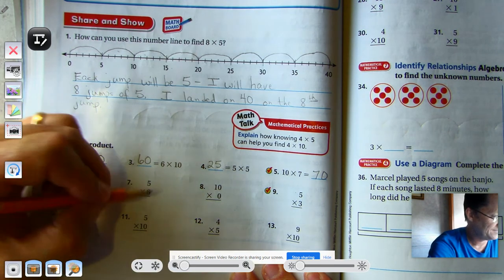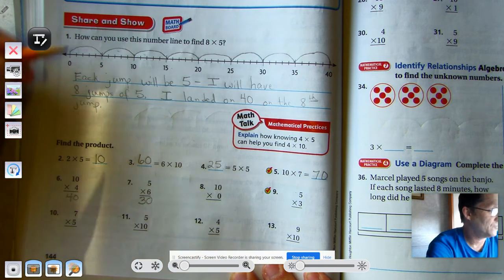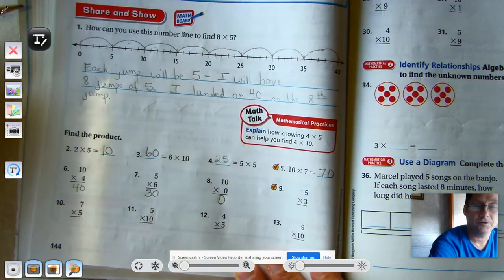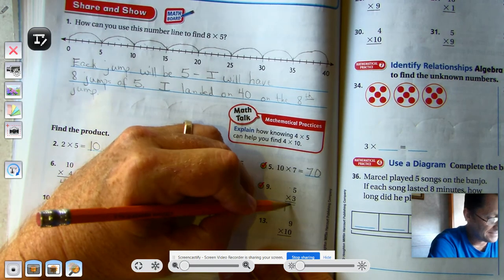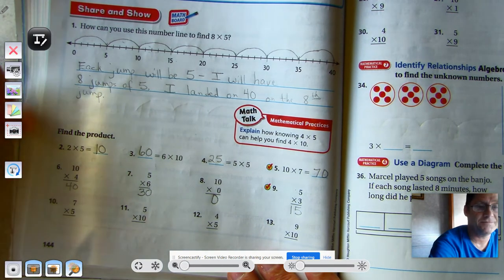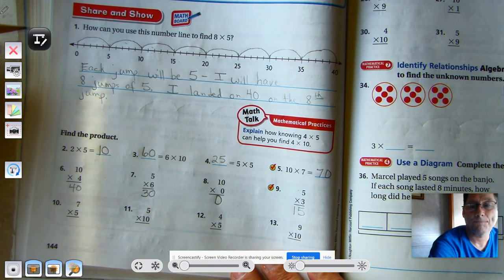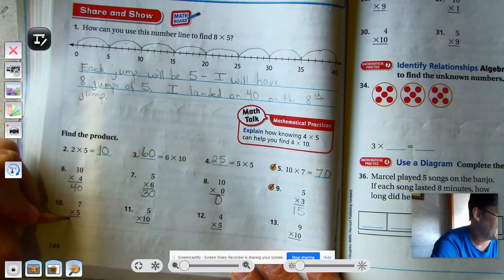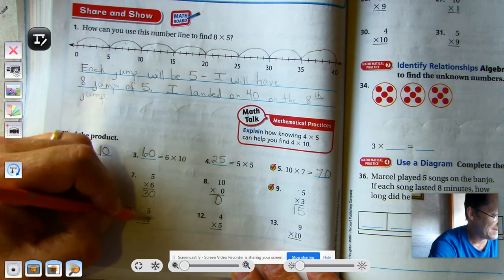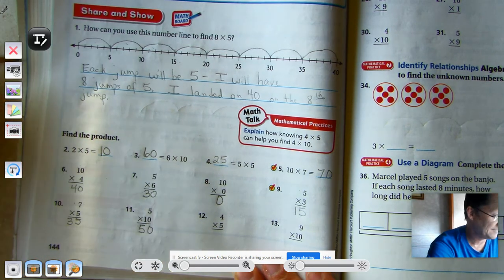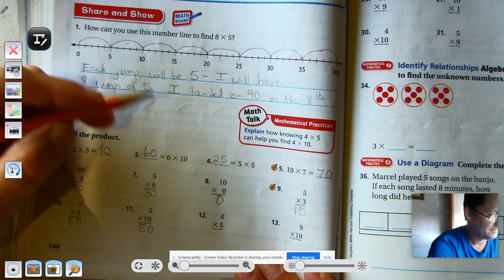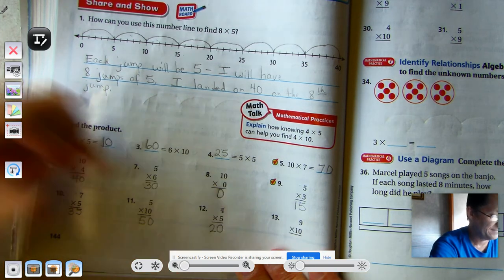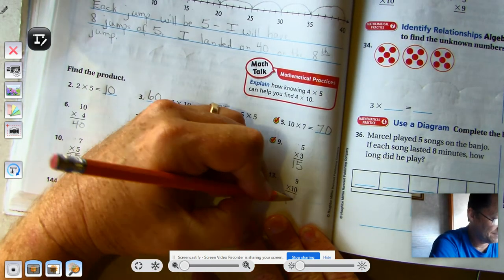5 times 6: 5, 10, 15, 20, 25, 30. We know that by the 0 property of multiplication that any number times 0 is 0. 3 fives is 15. 7 times 5. Well, if 6 times 5 is 30, we have 1 more 5, so 30 plus 5 is 35. 5 times 10, we know it's going to end in 0, so 50. 4 times 5. If 5 times 5 is 25, this is 1 less 5, so 25 take away 5, 20. And 9 times 10 is 90.